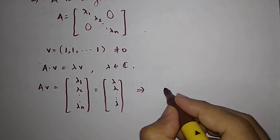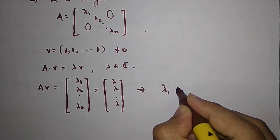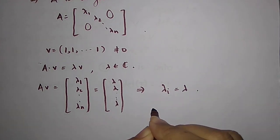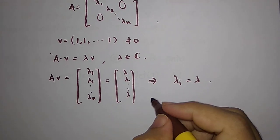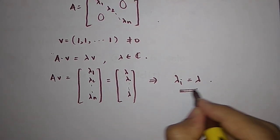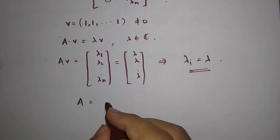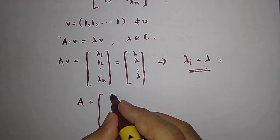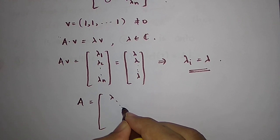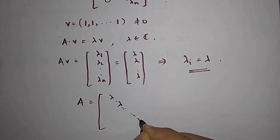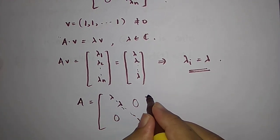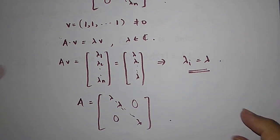What does this imply? This implies that all λ_i's must be equal to λ. So this means that A is a diagonal matrix but moreover A is just the scalar matrix where each diagonal entry is λ and all other entries are 0.